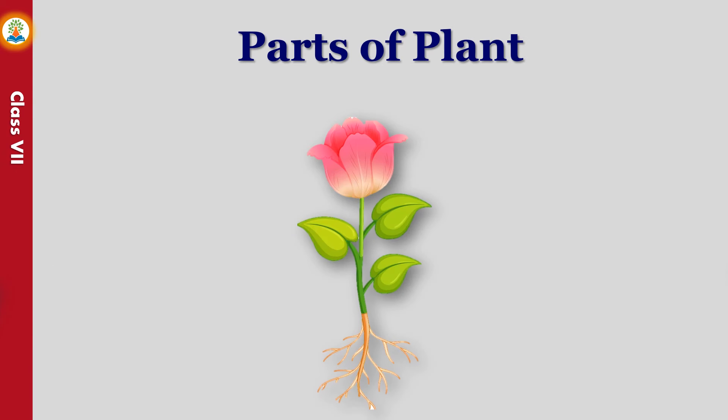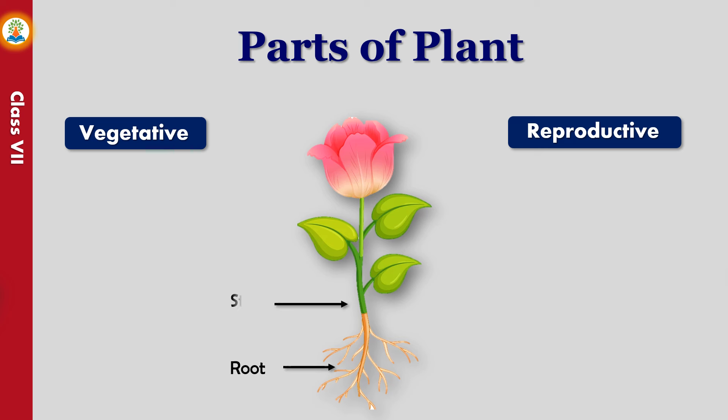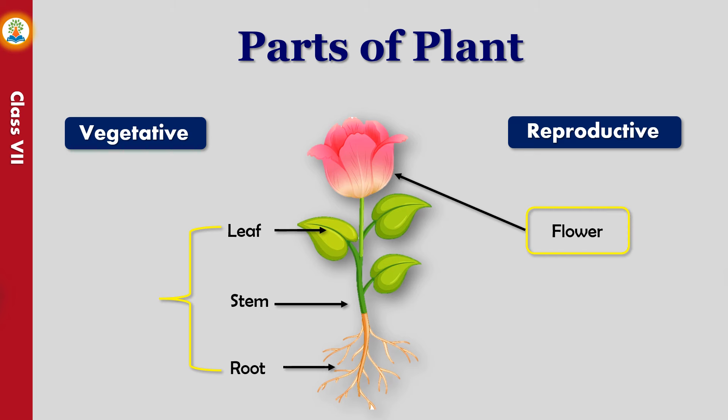Parts of plants are categorized into two: vegetative and reproductive. Root, stem, and leaves are vegetative parts of a plant. They are mostly responsible for the growth of a plant, but they may also help in the process of reproduction.